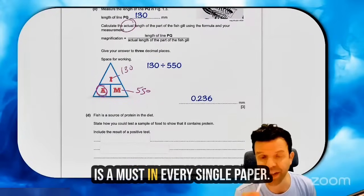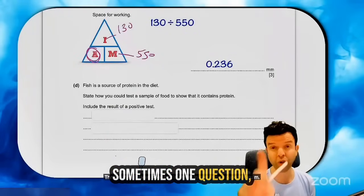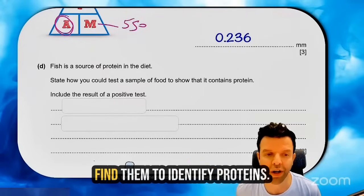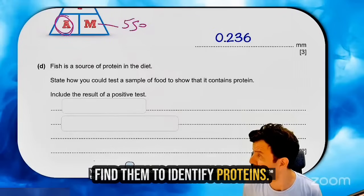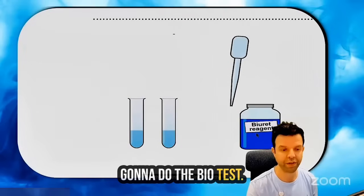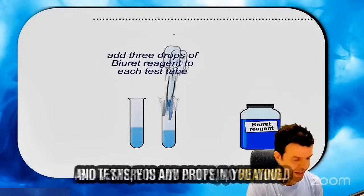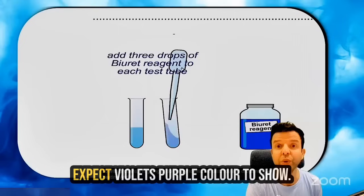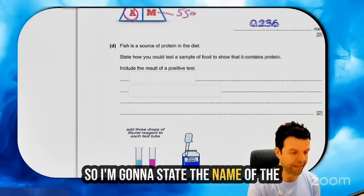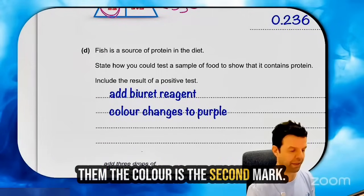Food tests are a must in every single Paper 6 exam — sometimes one question, sometimes two questions. Here they wanted me to identify proteins. With proteins, I'm going to do the Biuret test. You add drops, no heating. And if there is any protein, you would expect a violet or purple color to show. So I'm going to state the name of the indicator — that's one mark — and then tell them the color change — that's the second mark.